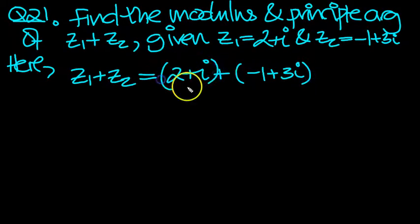Put a bracket around these complex numbers for clarity. So it's 2 plus minus, plus and minus is a minus, so 2 take minus 1. i plus 3i is 4i. So it's 1 plus 4i.